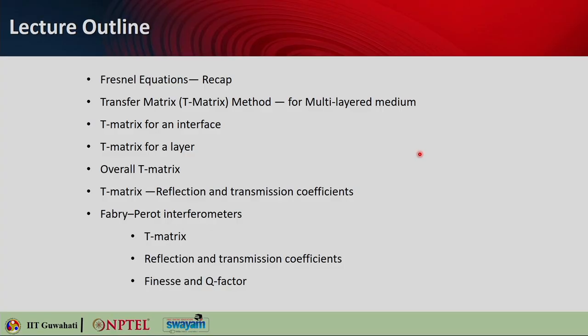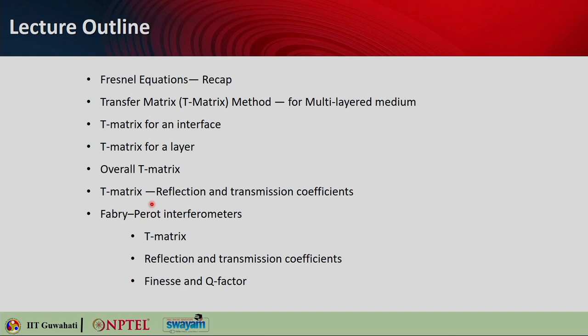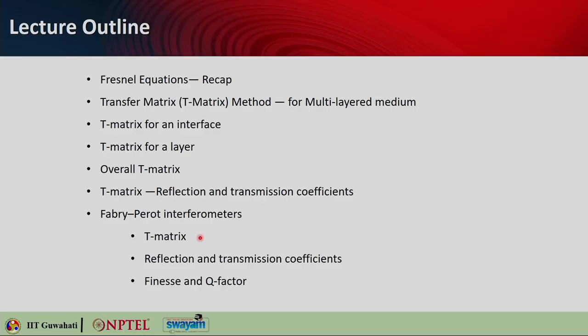Here is the lecture outline. We will have a quick recap of Fresnel's equations and then we will introduce a very effective theoretical tool called the transfer matrix or T-matrix method, which can be used for calculation of reflection and transmission across any multilayered medium. We will first learn how to obtain the T-matrix for an interface, then for a layer, and then the overall T-matrix for a multilayered system. We will correlate the T-matrix to reflection and transmission coefficients, and take an example of the Fabry-Perot interferometer, obtaining finesse and Q factor.